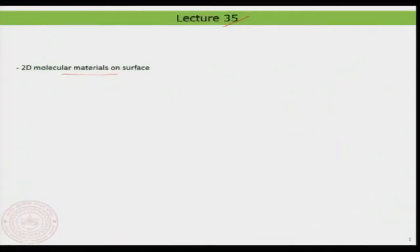Hello everyone, welcome back to lecture number 35. In this lecture we will continue on the topic that we have been discussing — two-dimensional molecular materials on surfaces. In the previous class we looked at the first type of two-dimensional molecular material, basically by having an aromatic linkage between the molecules in a kind of assembly.